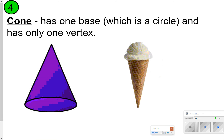Number four is a cone. That one only has one base, and it's always a circle, and only one vertex. This one's pretty easy. Go ahead and pause the video, write down what you see, and then click play to go on to number five.